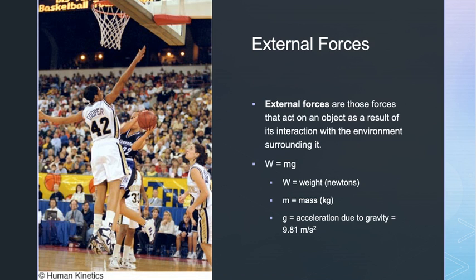The force of gravity acting on an object is defined as the weight of the object. When someone asks how much you weigh, that is really an investigation of gravity acting on your body's mass, accelerating your body towards earth. Scientists have precisely measured the acceleration for various masses at various locations around the earth, which appears to be about 9.81 meters per second squared downward, no matter how large or small the object is. On earth, mass is measured in kilograms and weight is measured in Newtons. Kilograms and Newtons are proportional to each other by a factor of 9.81. Thus, the weight of an object in Newtons is its mass in kilograms times the acceleration due to gravity.